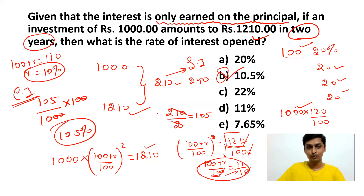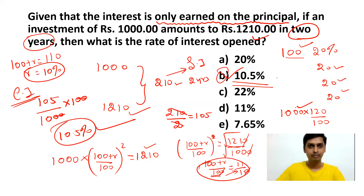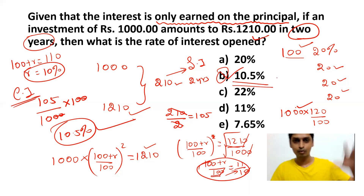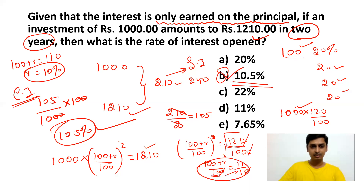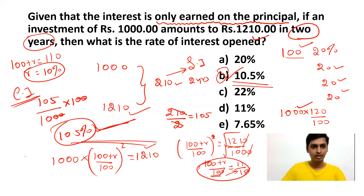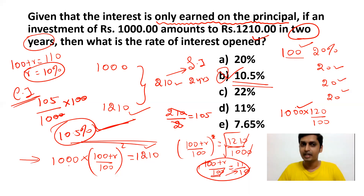But for this question, since it specifies interest earned only on the principal (simple interest), the answer is 10.5%, which is option B. I worked through the compound interest method to show how it differs. When it comes to compound interest, you work with the formula as shown.